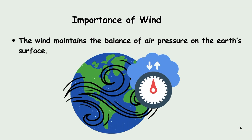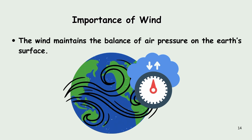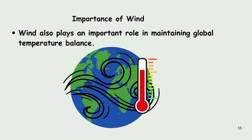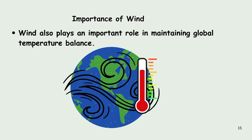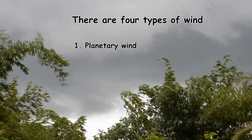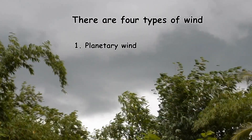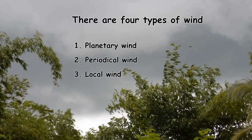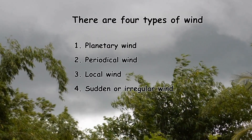Now let us see the importance of wind. Wind maintains the balance of air pressure on the earth's surface. Wind also plays an important role in maintaining global temperature balance. There are mainly four types of wind: planetary wind, periodical wind, local wind, and sudden or irregular wind.